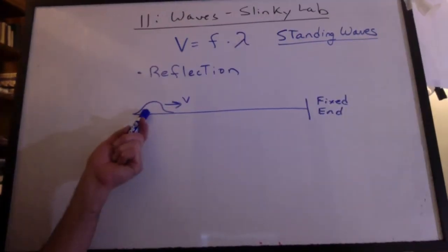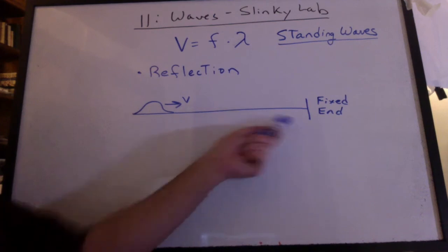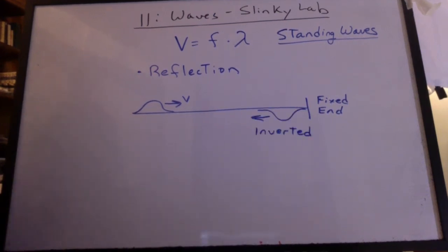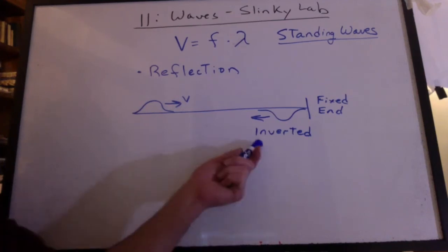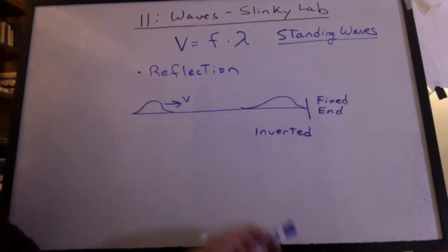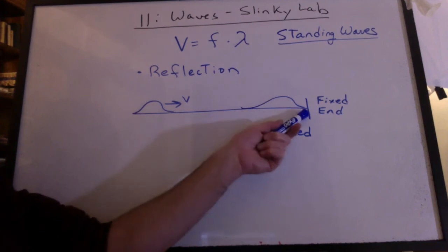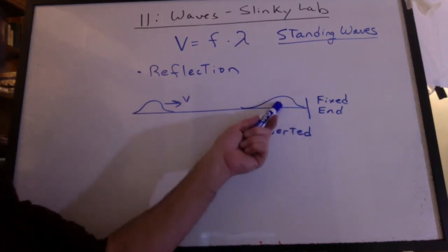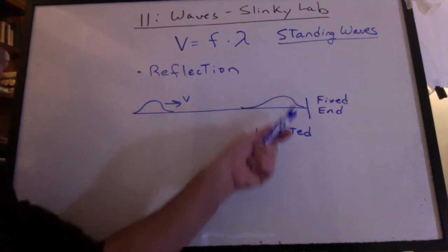First we take a pulse and send it down to the fixed end, and we look to see what happens when it comes back. You should be able to see that it reflected inverted. Now why does that happen? As the wave approaches the fixed end, the wave pulls up on the end. The end pulls down on the wave, and that causes it to flip over.